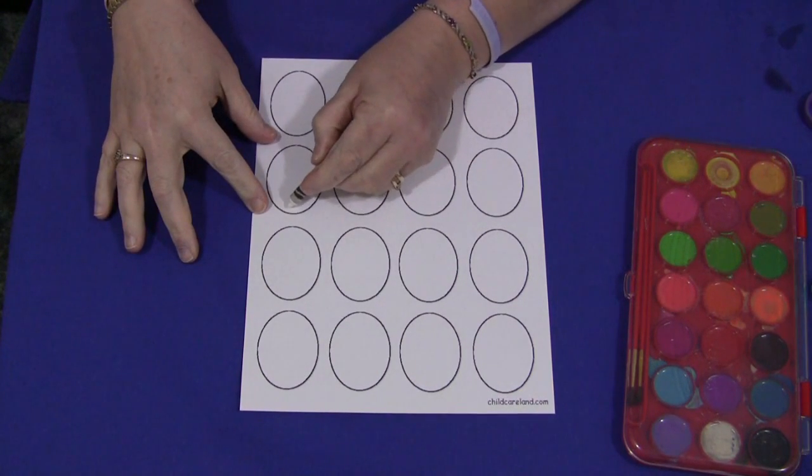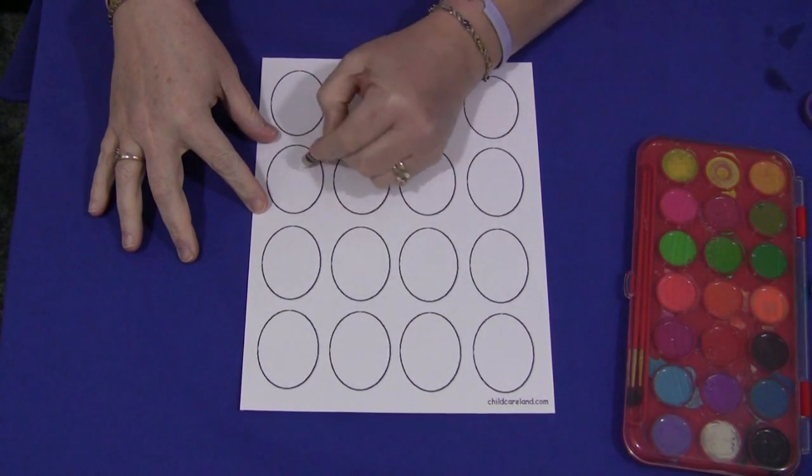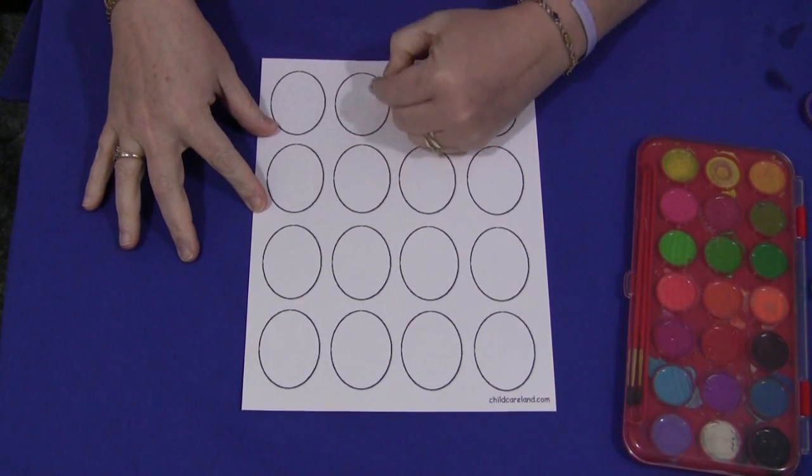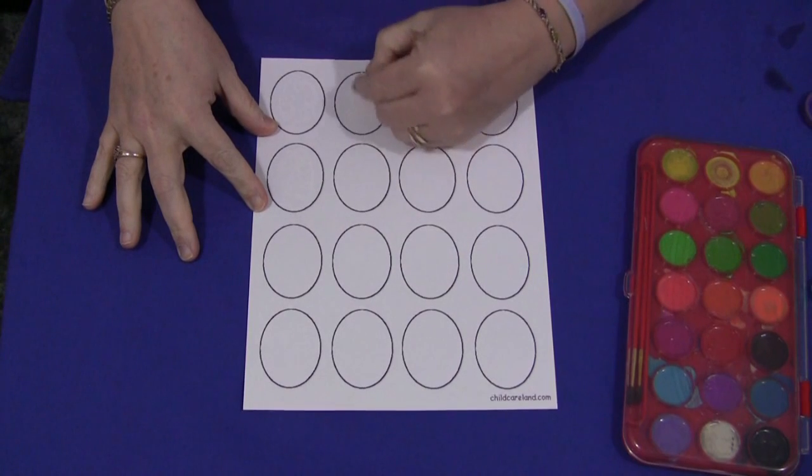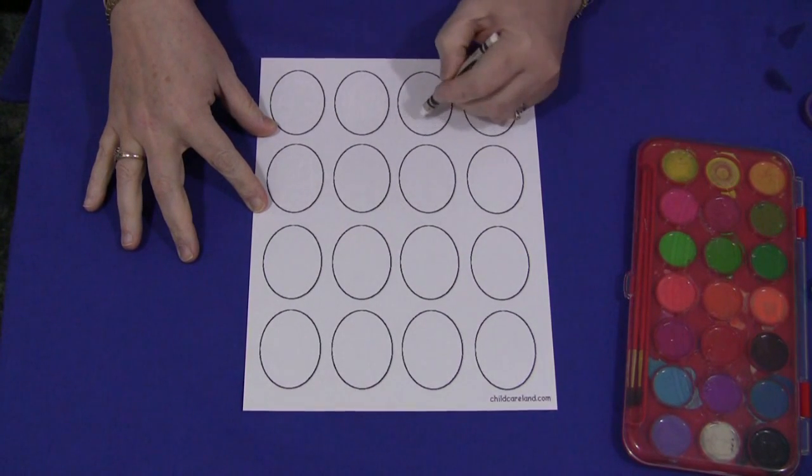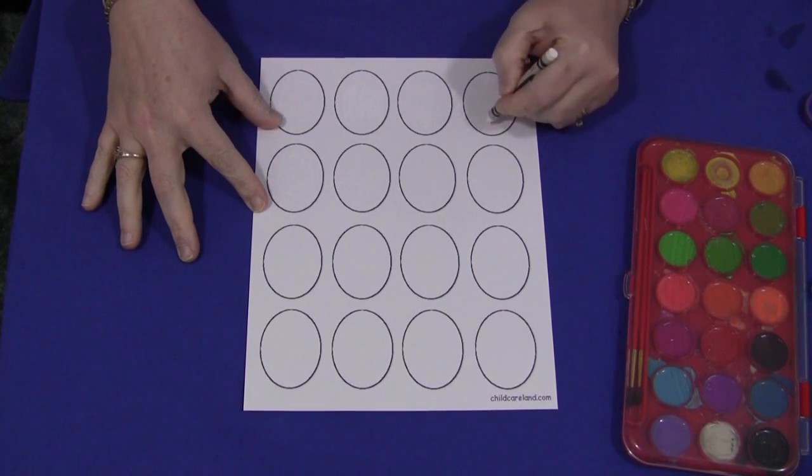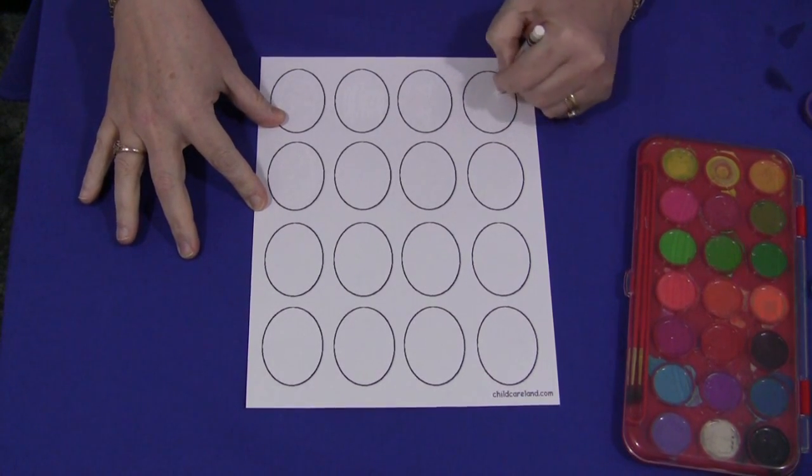Inside of each egg they can make whatever kind of designs that they want. So if they want to make a bunch of swirls, a bunch of lines, maybe some different kind of shapes, just whatever they want to make.